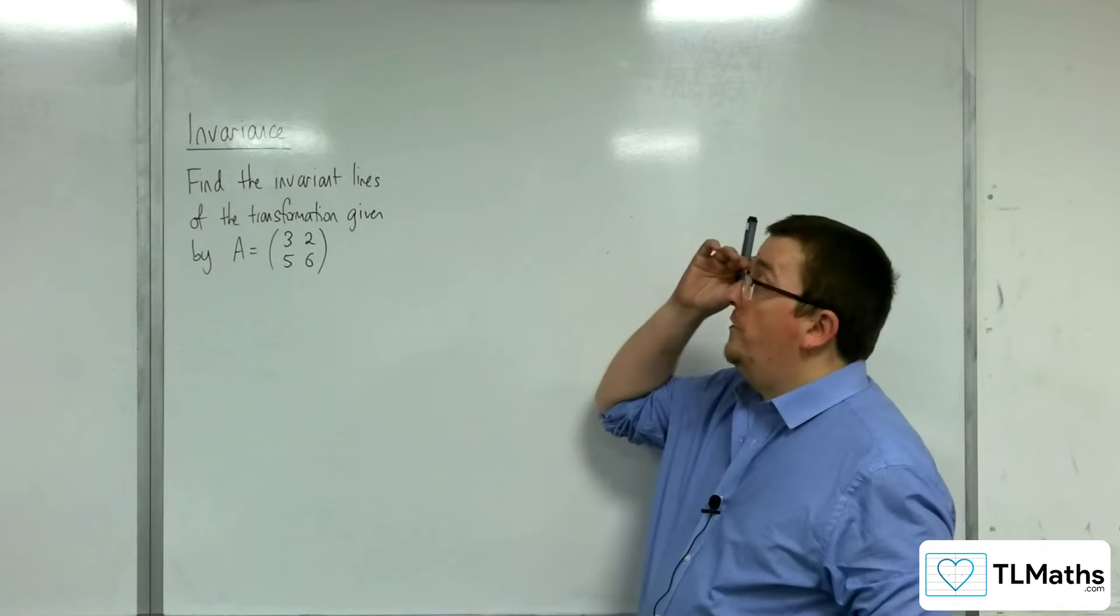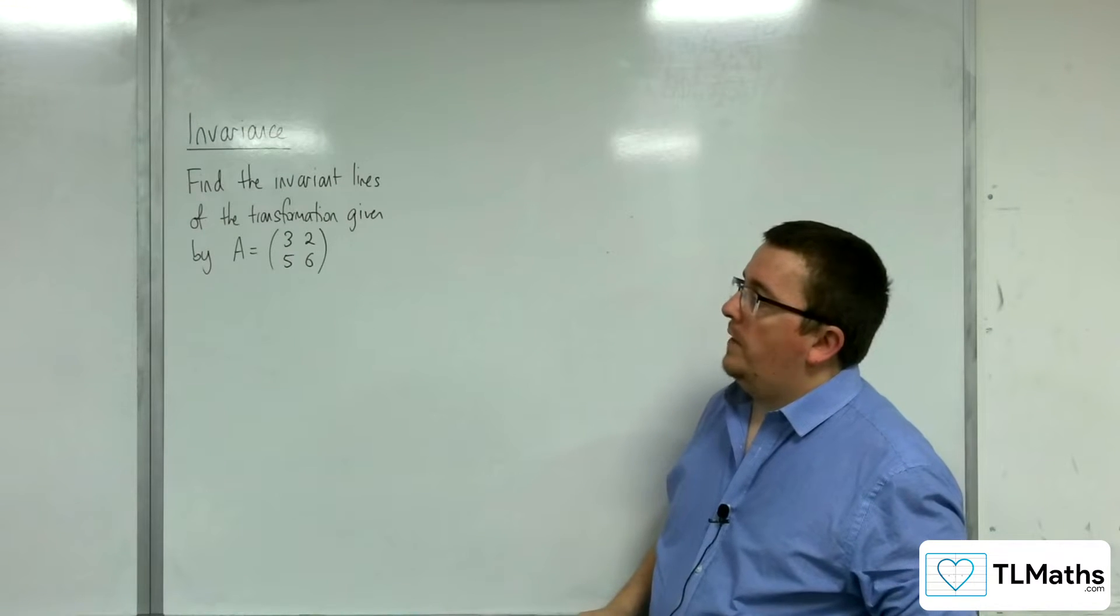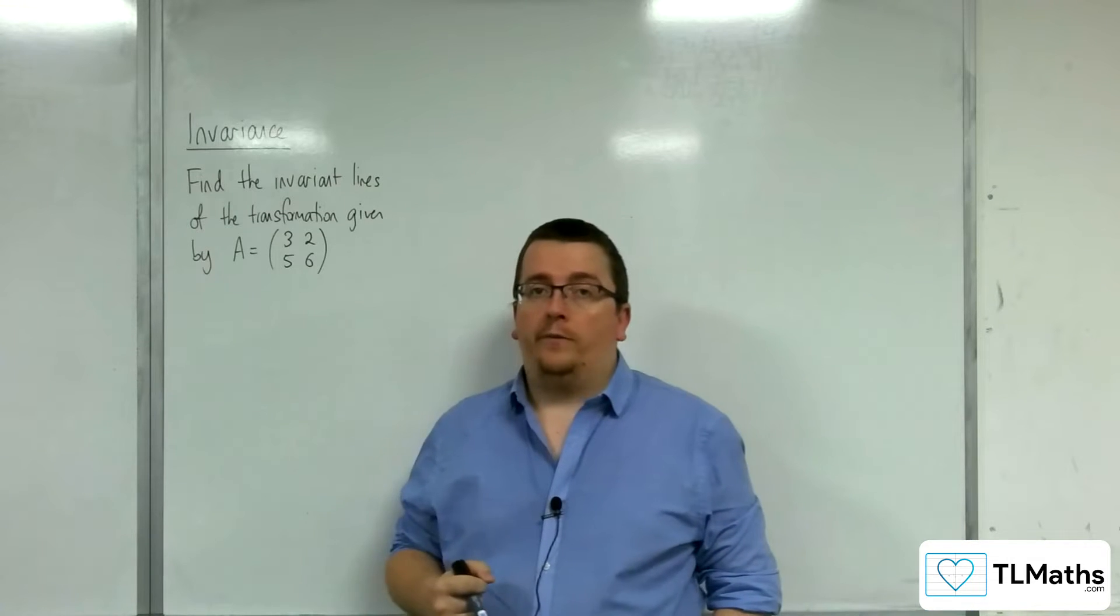So in this video we are going to try and find the invariant lines of the transformation given by this matrix here. A is 3, 2, 5, 6.